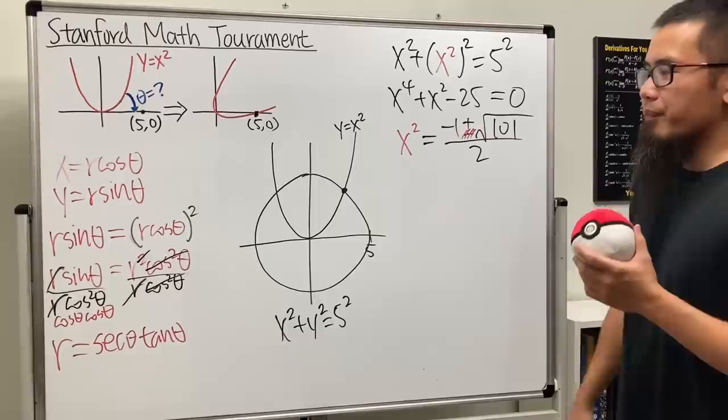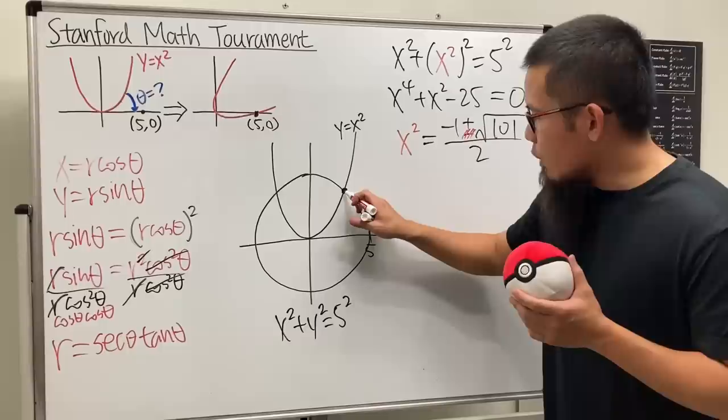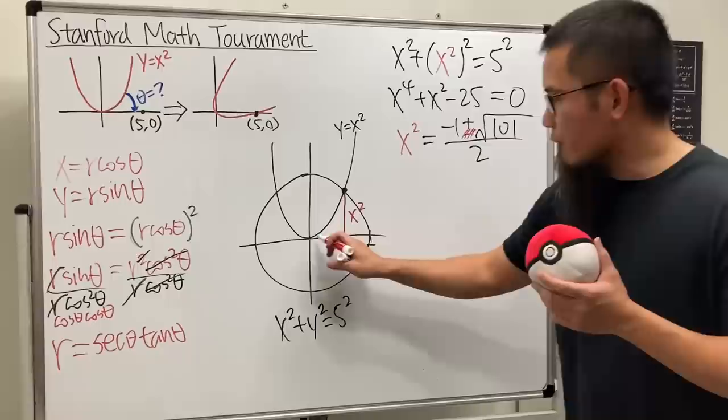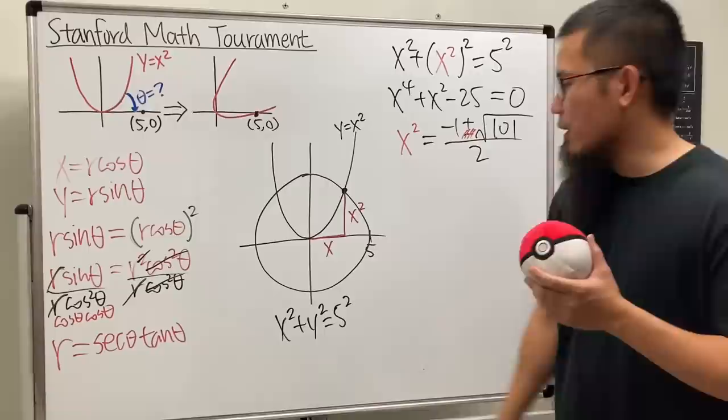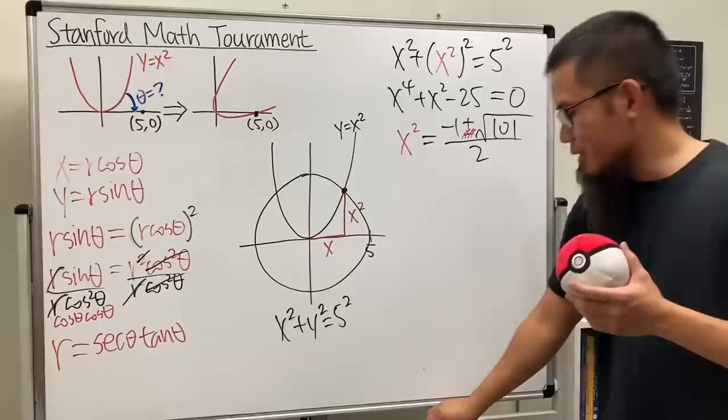So we can just go ahead and say x squared equals, well, use the quadratic formula. We get negative 1 plus or minus square root of b squared, which is one squared, minus four times this and that, which is minus 100, so plus 100, and then plus the one which is 101, divided by two times that. But you see this is x squared and of course everything should be real because otherwise you cannot see anything.